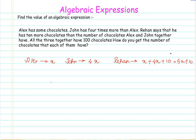We have derived algebraic expressions for what Alex, John, and Rehan each have in chocolates, but we still don't have concrete numerical values. The next statement says that all three together have 100 chocolates. That means what Alex has plus what John has plus what Rehan has sums up to 100 chocolates.